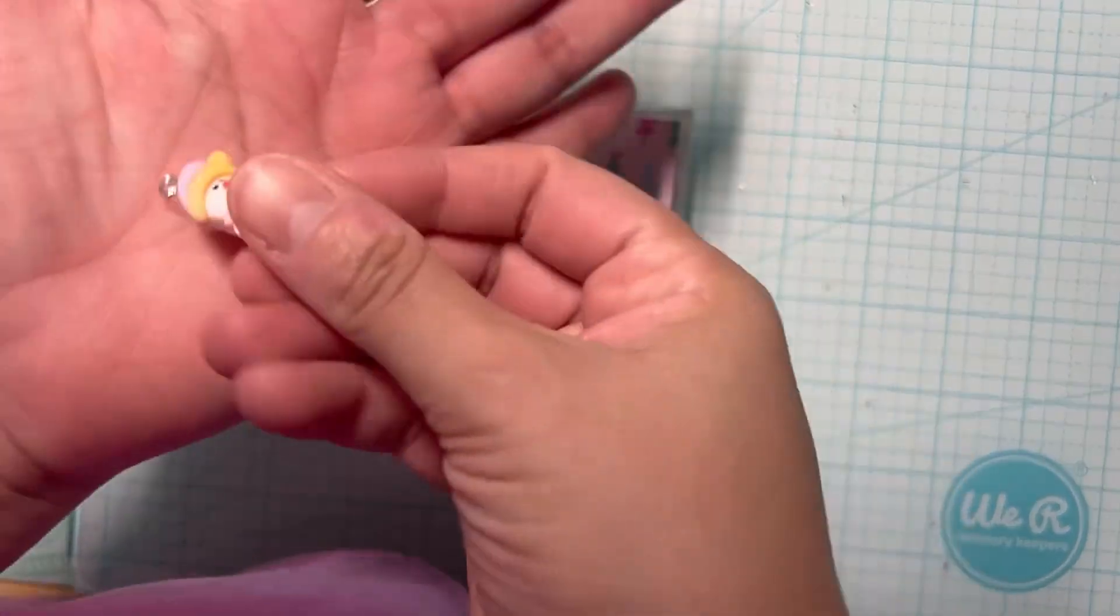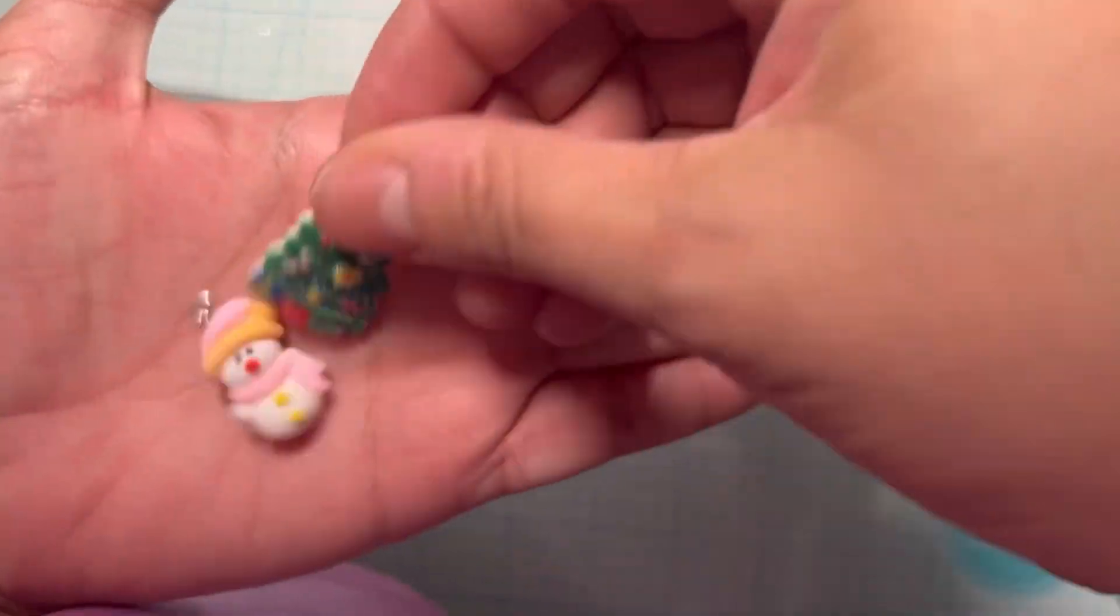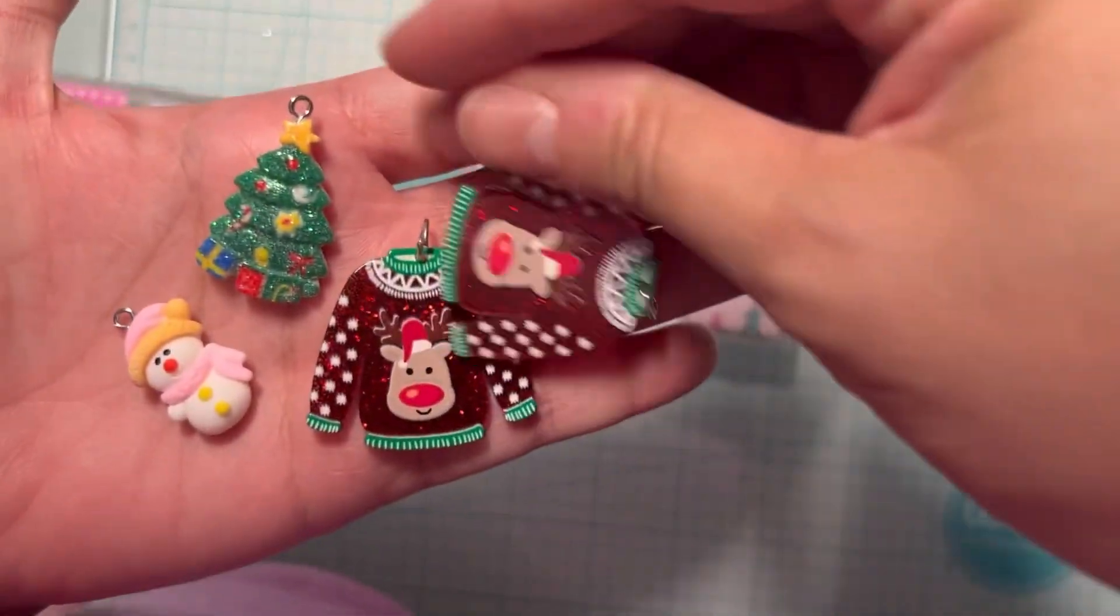The second one we have a cute little snow girl, sparkly Christmas tree, and some cute little sweaters.